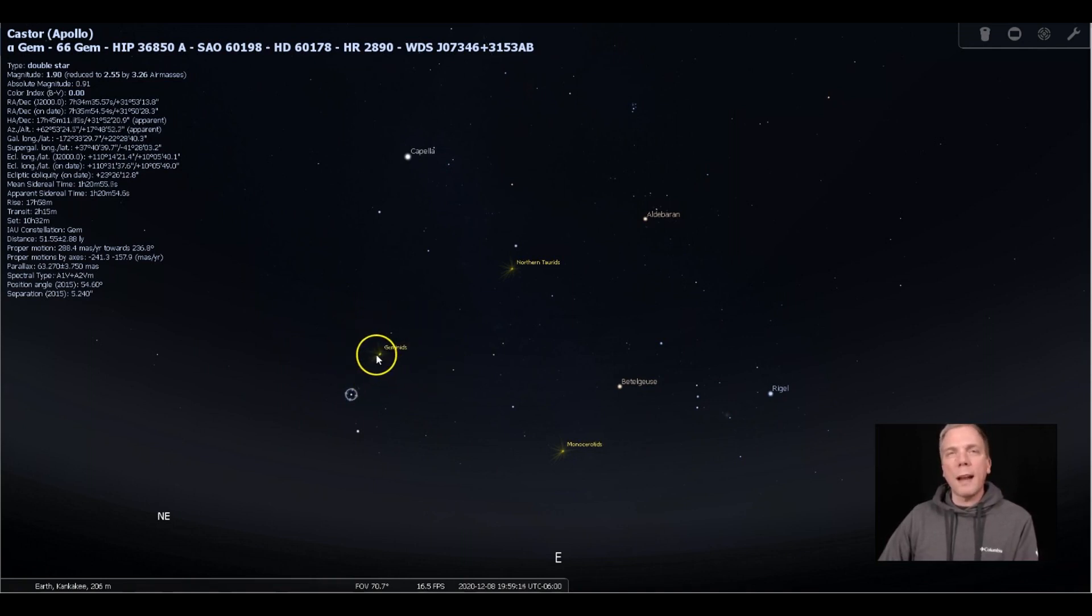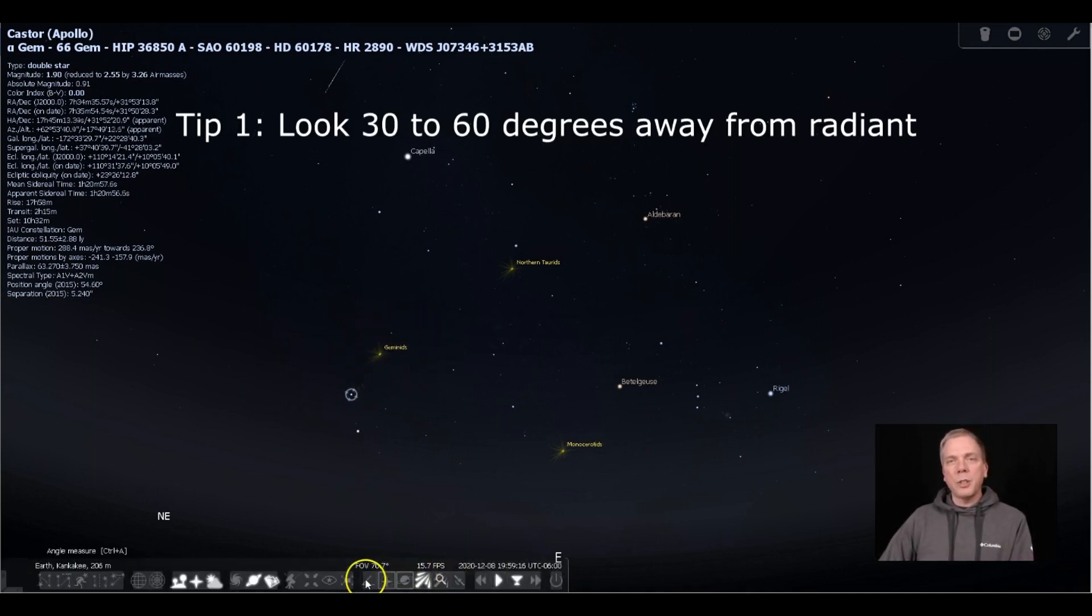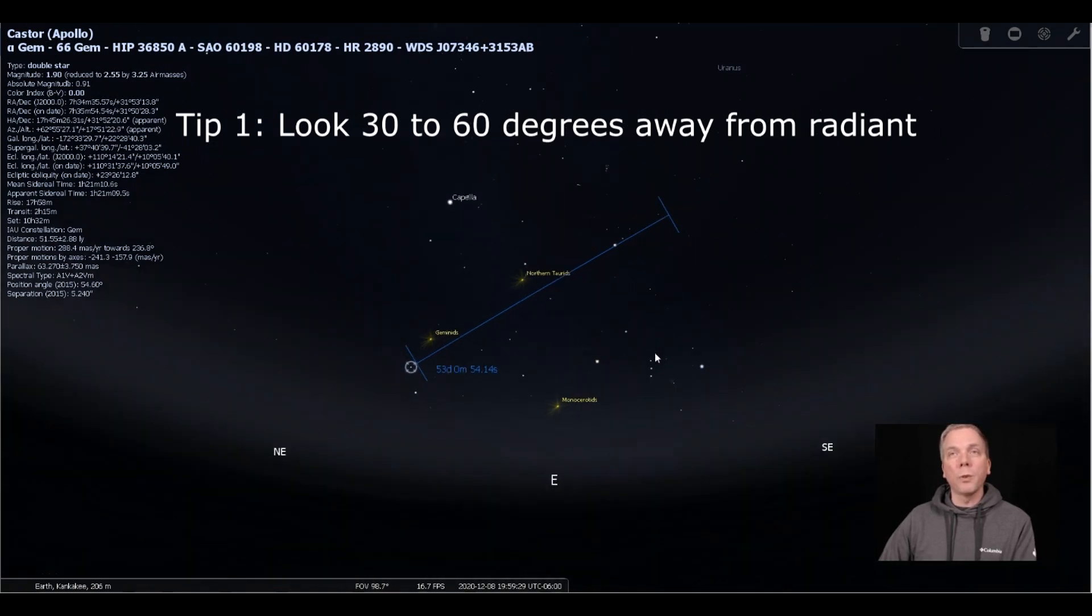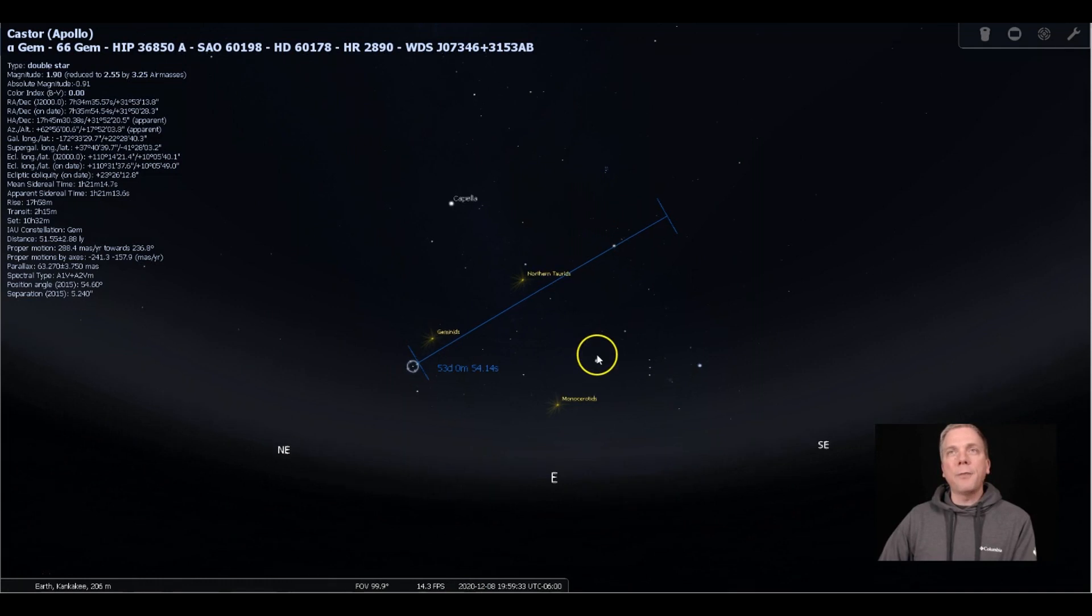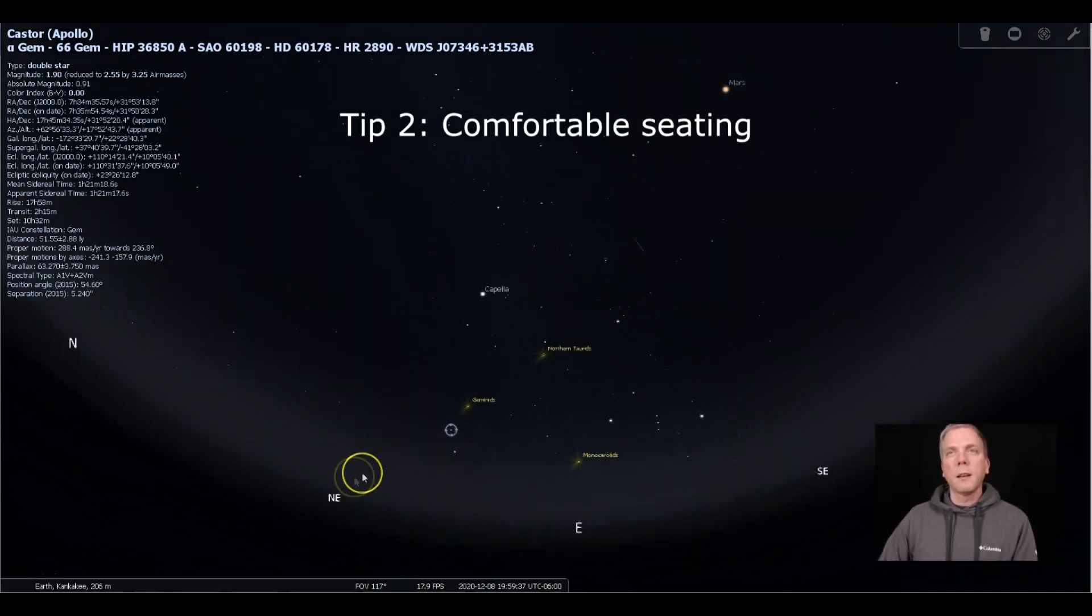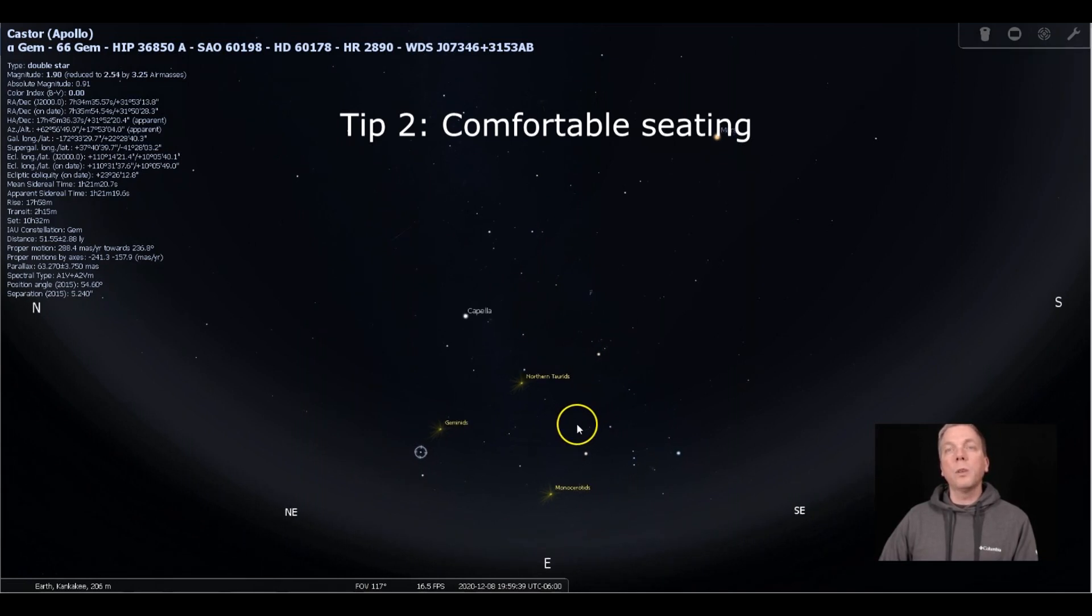But you don't want to necessarily look right at there. Really what we tend to do is look outside of there. So if I bring up our angle measuring tool, if you look maybe 30 to 50 or 60 degrees beyond there, out in this area, this is where you're gonna probably see more of those meteors - out in this direction. So if you look here like this, we can see that we would be really looking almost up overhead.